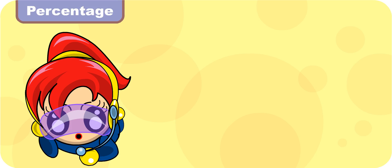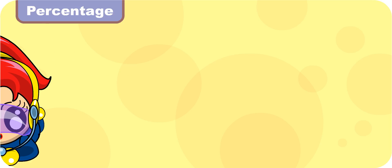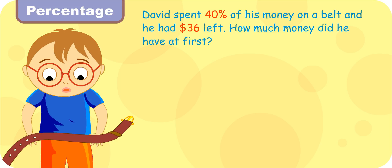Now, we shall learn how to find the whole when given a part and a percentage. Okay. David spent 40% of his money on a belt and he had $36 left. How much money did he have at first?